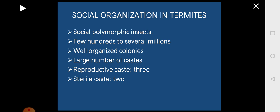There are two major castes present in the colony of the termites. One is the reproductive caste, where there are three types under the reproductive caste. The second major one is the sterile caste, where there are two different types of members present.